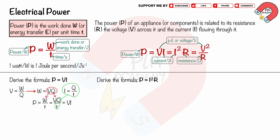We can derive the formula P equals I squared R as follows. From the formula P equals VI, and V equals RI. Substituting V equals RI into P equals VI, we get P equals I squared R.